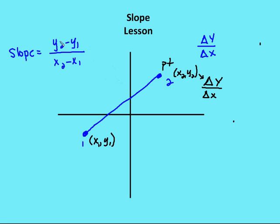It doesn't matter if you place the first point first and subtract the second point from the first point. But you cannot mix and match between the denominator and the numerator. So if you're going to find the slope, you can subtract the differences from point 1 or from point 2, but you cannot subtract the differences for the numerator from point 1 and the denominator from point 2.